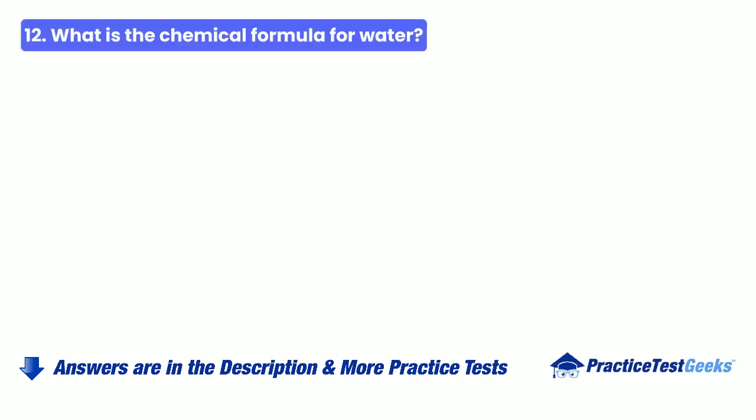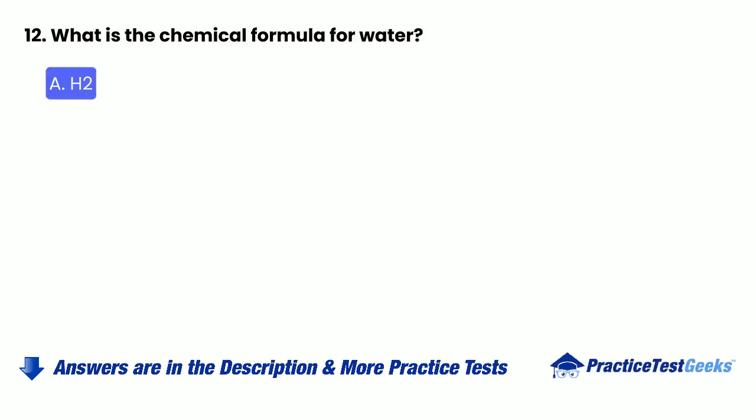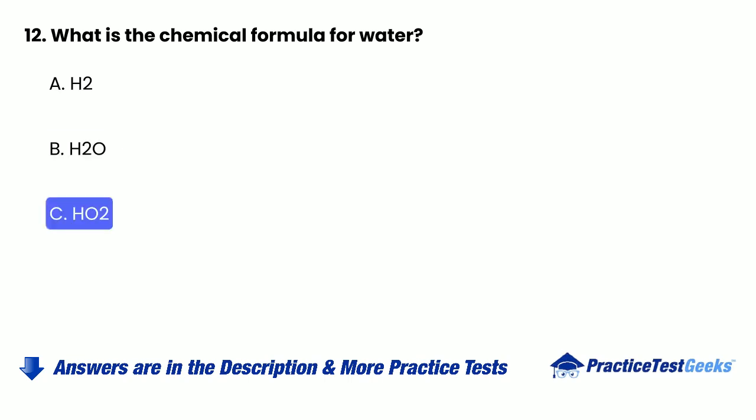Question 12: What is the chemical formula for water? A. H2. B. H2O. C. HO2. D. H2CO3.